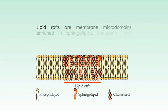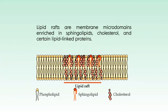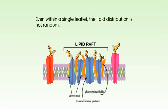Membrane rafts and caveolins: lipid rafts are membrane microdomains enriched in sphingolipids, cholesterol, and certain lipid-linked proteins. Diffusion of membrane lipids from one bilayer leaflet into the other is very slow unless catalyzed, and the different lipid species of the plasma membrane are asymmetrically distributed in the two leaflets of the bilayer. Even within a single leaflet, the lipid distribution is not random.